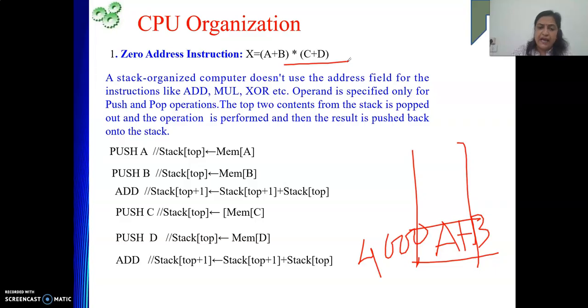So only add we need to write. We cannot write any operand with this. Add. So what it will do? Previously, here C and D were there. Now it will become C plus D at this stage. So at 3996, we will get this. Now what we need to do?